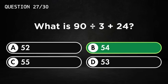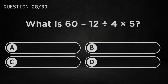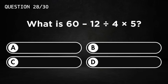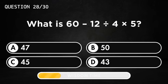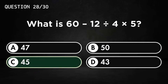What is 60 minus 12 divided by 4 times 5? Answer C, 45.